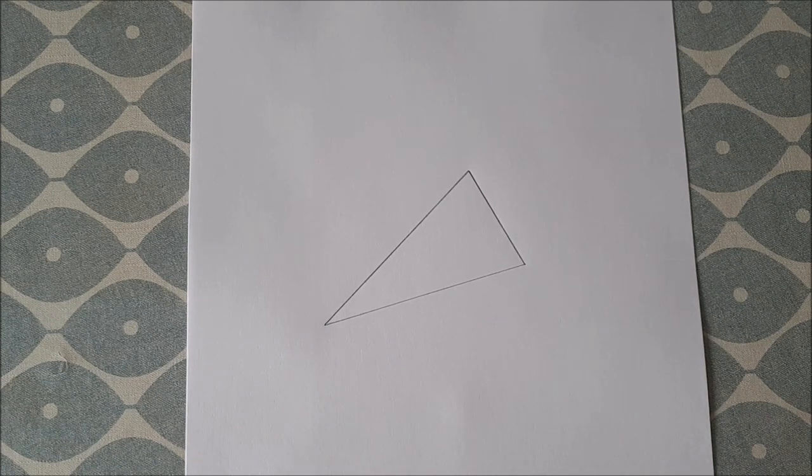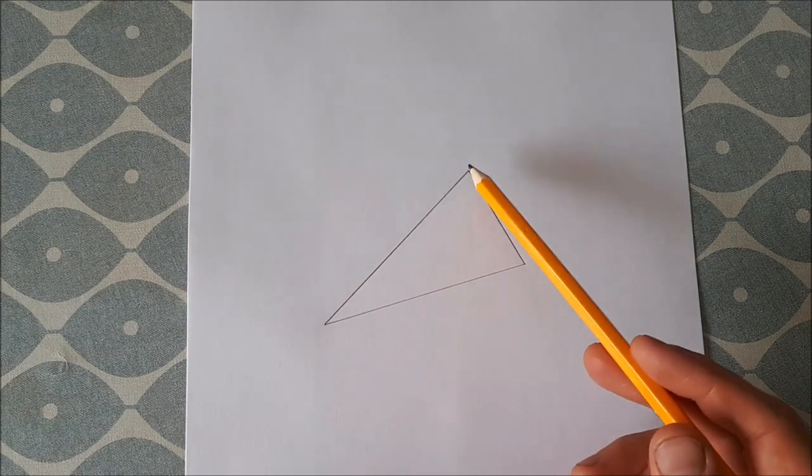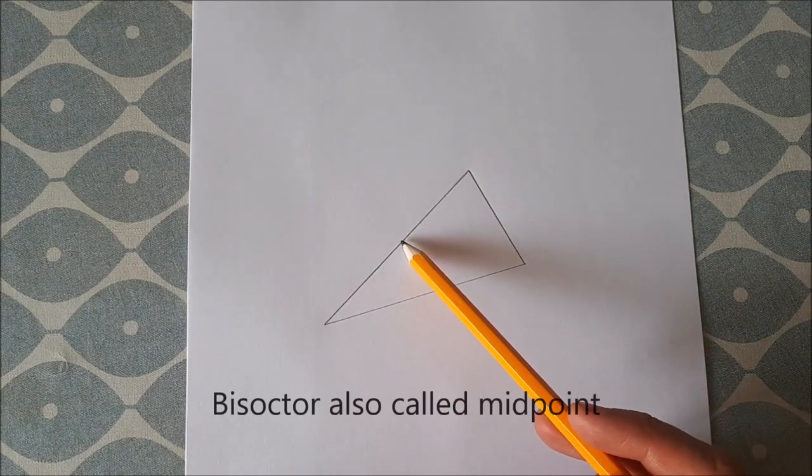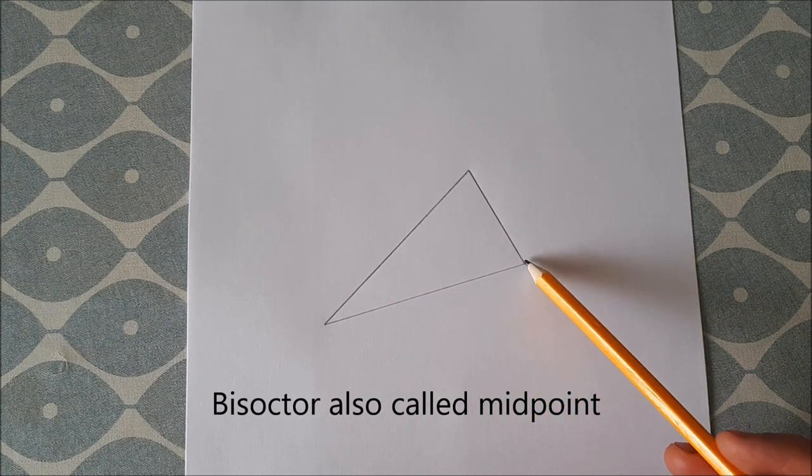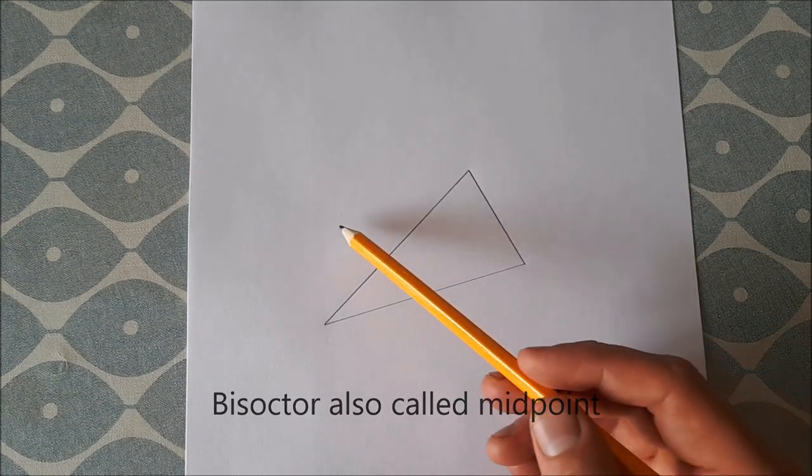So to draw the centroid, what you do is you bisect two of the lines. So bisect the line, find the bisector, and you join the bisector to the opposite vertex of the triangle, and this line is called your median line.